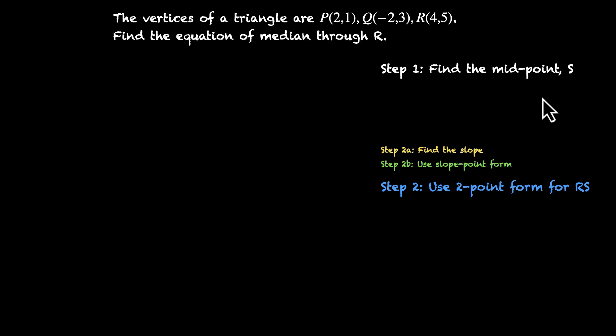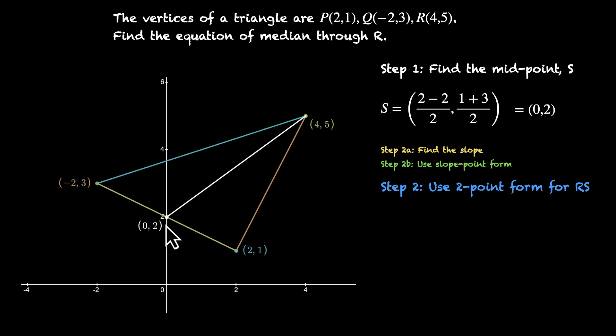But first let's find the midpoint. So midpoint is S. We can calculate the coordinates by taking the averages. 2 and -2, the average is 0. And then 1 and 3, the average is going to be 2. So (0,2) is our point S. This is the midpoint of PQ. Let's plot it.